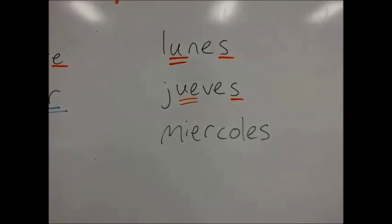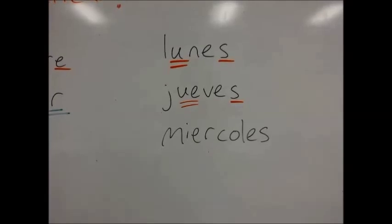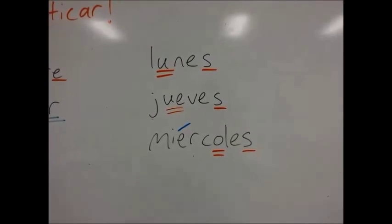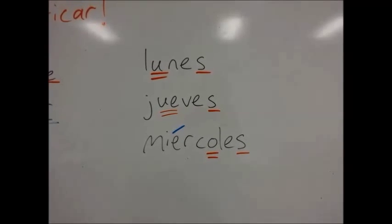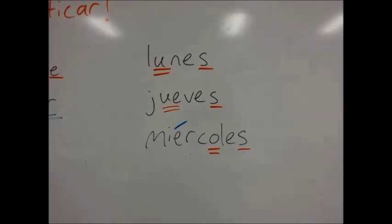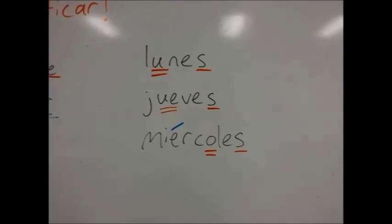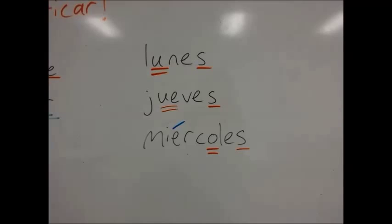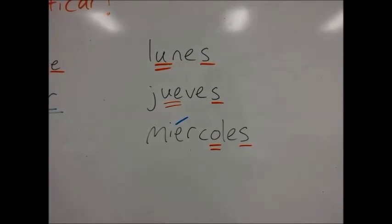Now the last word. I'm not going to pronounce it yet, because I want to see what happens when we try to follow the rule. This word ends in S, so naturally it's llana and the emphasis should be on the second to last syllable. But that would make it miércoles, when the word is actually miércoles — the emphasis is on the third to last syllable, making it esdrújula. So we put an accent over the E. Also note: if you have two vowels in the same syllable, put the accent on the stronger vowel. I and U are weak vowels, so the accent normally falls on A, O, or E.